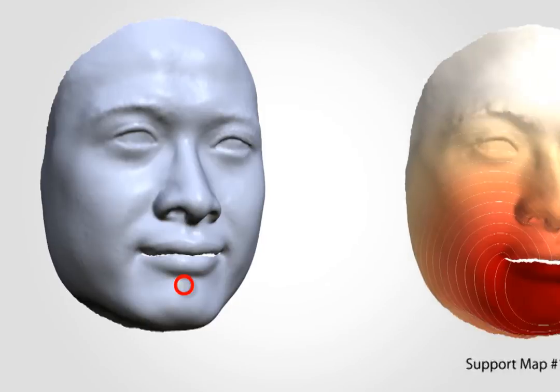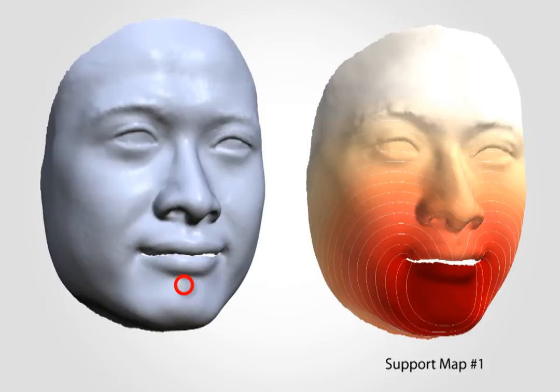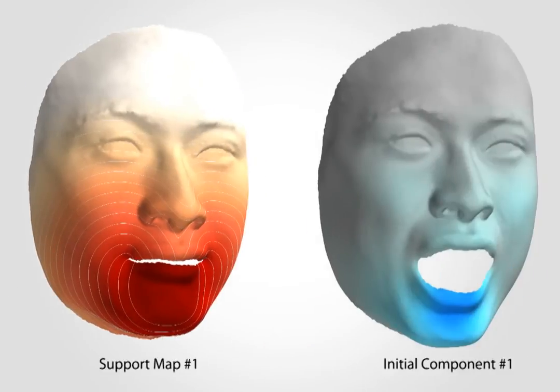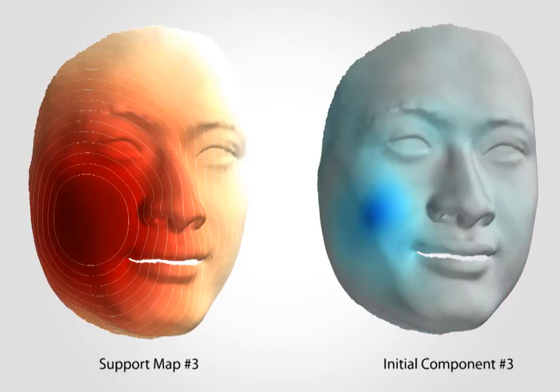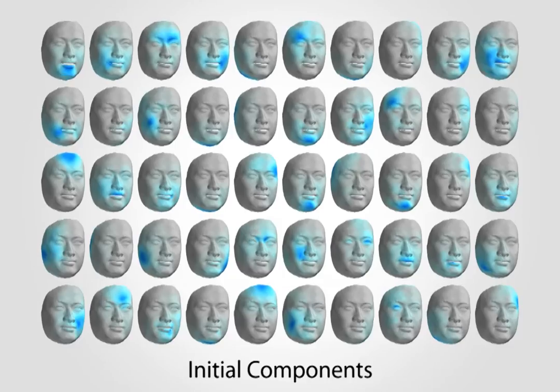A support region is built around this vertex based on geodesic distances. We find the deformation component corresponding to this region. This procedure gives us an initial set of spatially localized components.